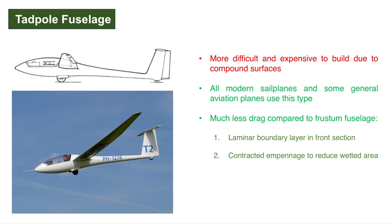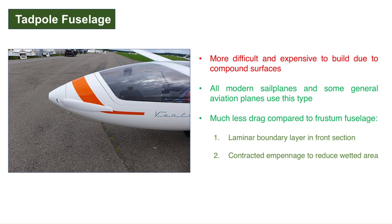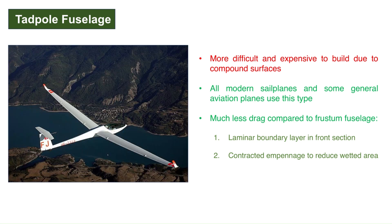Tadpole fuselage — it is more expensive to build due to the compound surfaces, but comparatively economical if composites are used for construction. All modern sailplanes as well as some general aviation planes use this type of fuselage because of its low drag characteristics. It has much less drag compared to a frustum fuselage because of two main reasons. First, the forward section is shaped in such a way as to sustain a laminar boundary layer. Secondly, as the empennage is contracted, it has lesser wetted area which leads to lesser skin friction drag.